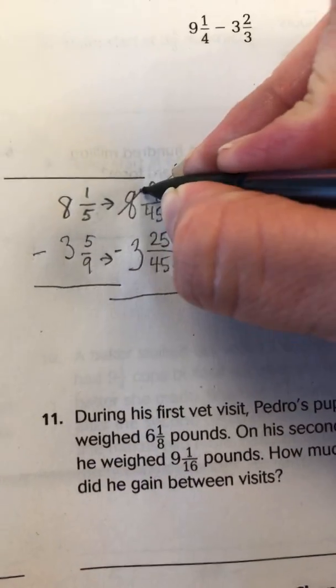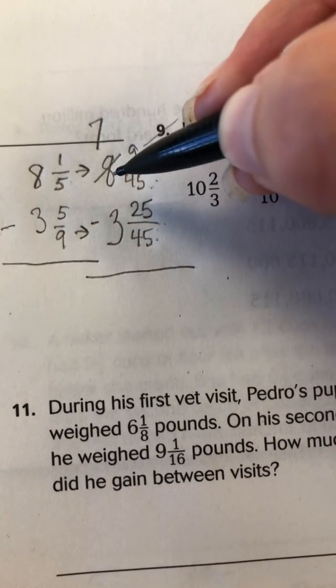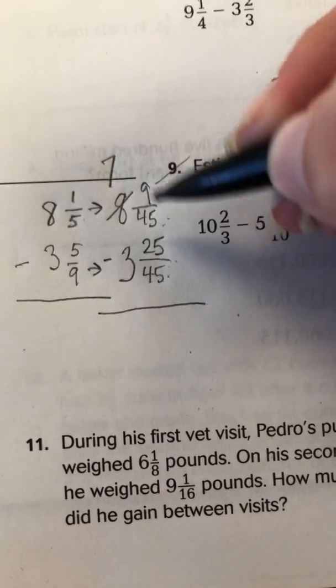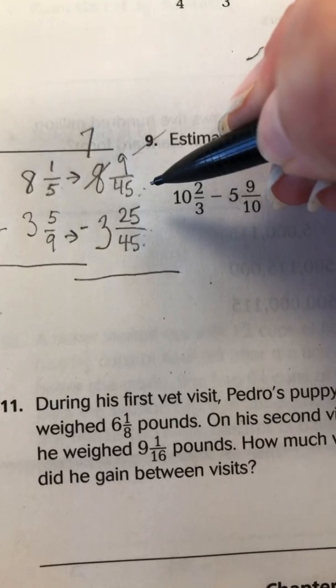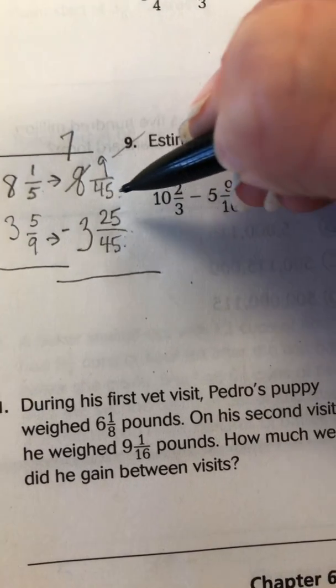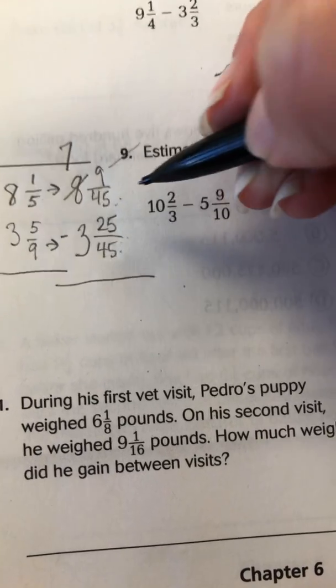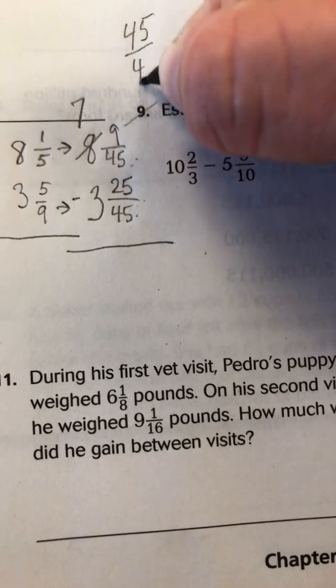So let's cross off our 8. Make it a 7. And then we're going to bring, we took a whole number from here, so we've got to bring that whole number over to here. So basically, if I convert this whole number that I took from here into a fraction, I want to make sure it has the same denominator here so I don't have to worry about making a common denominator again. So basically, what I'm bringing over is 45 over 45.